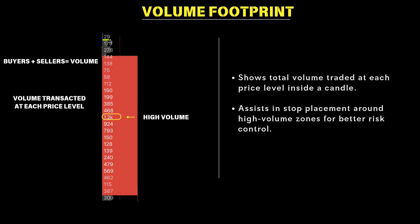So we had 29 volume at this price point, 179 volume here at this price point. We had 278 aggressive buyers and aggressive sellers at this price point. And then down here we had a really high volume area — 1.2 thousand volume — that's a little higher than the rest of the surrounding volume points. So this might be a more significant level that you might want to pay attention to for your trading if this is happening in your area of interest. This is going to be a building block into the bid ask and into the delta footprint as we move forward.